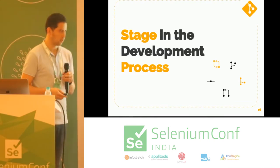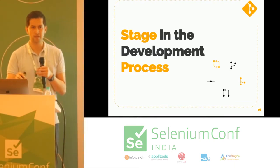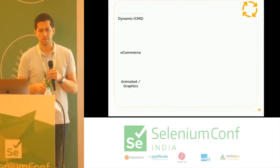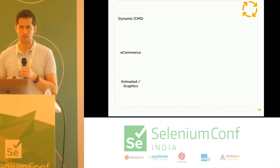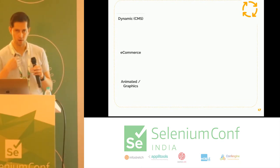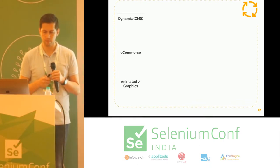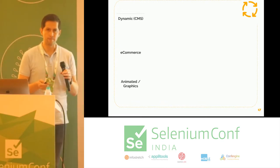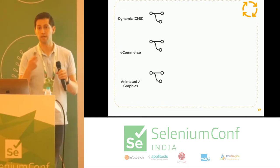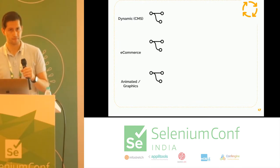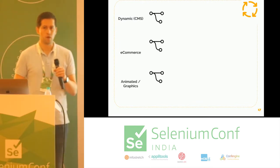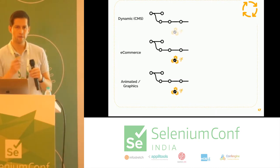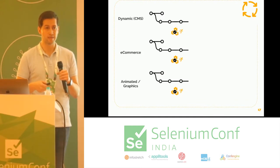Now let's talk about the stage in the development process — this was the main input to build the previous table. Let's think that we're working in an agile world with our features clear. We start a sprint and want to implement a feature. We open a feature branch, start working, doing commits, and one of the first things we wanted to achieve was to run tests on every commit.